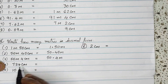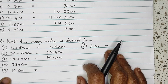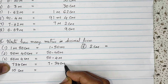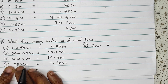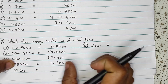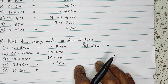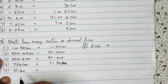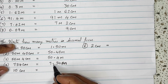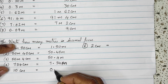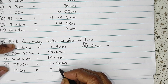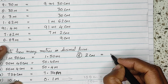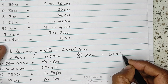734 centimeters — 1 meter equals 100 centimeters, so 700 centimeters equals 7 meters. Then 10 centimeters equals 0.1 meters, and 2 centimeters equals 0.02 meters. So, 734 centimeters is written as 7.34 meters.